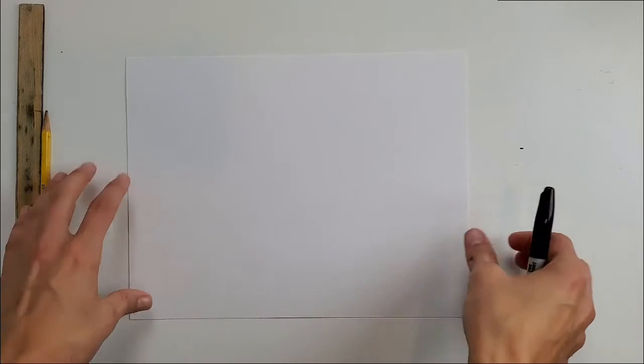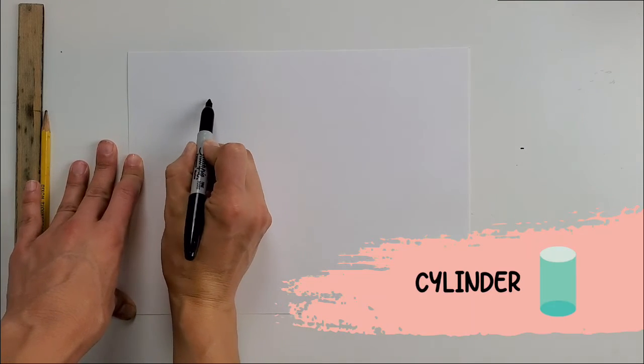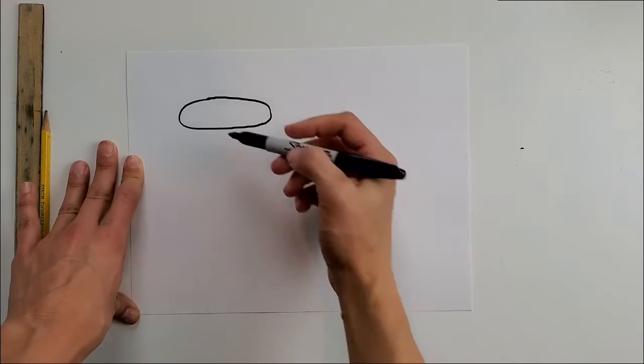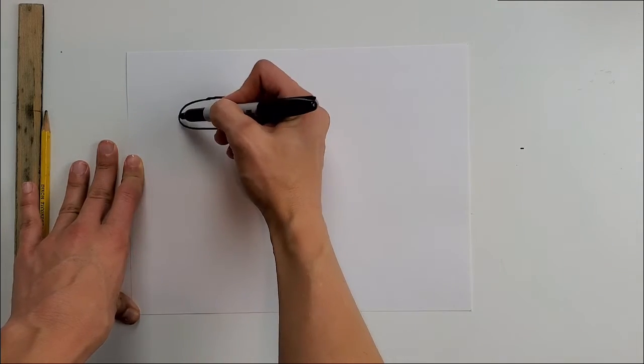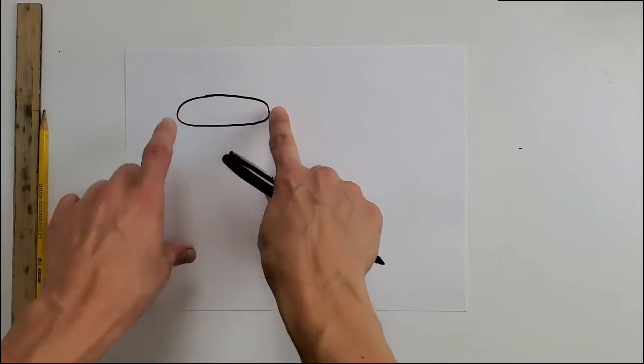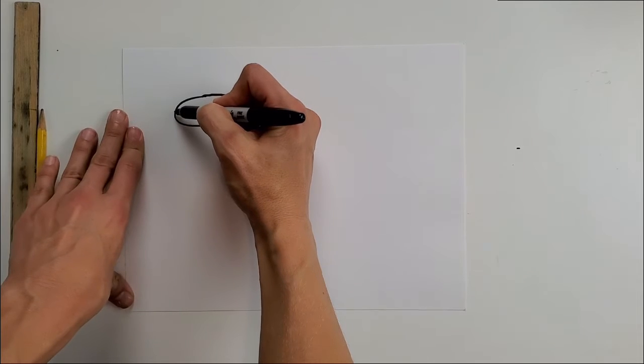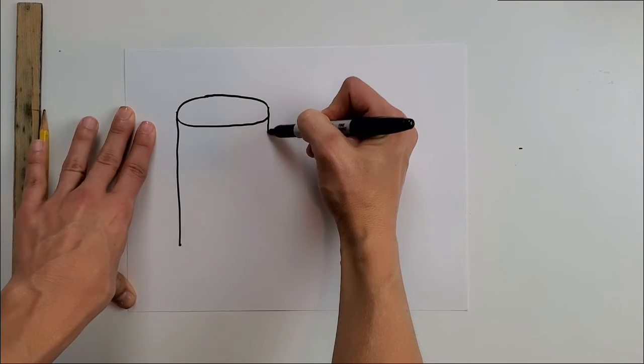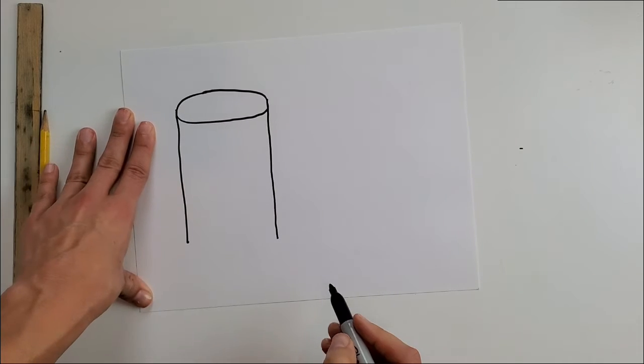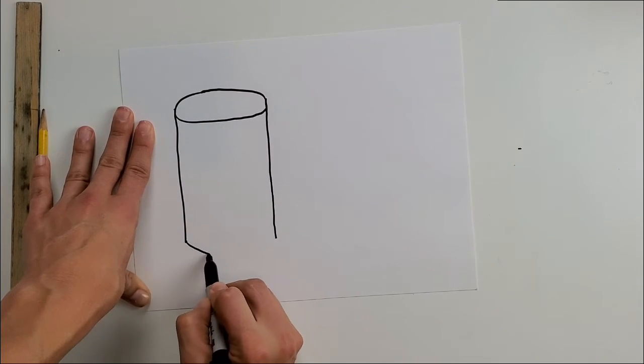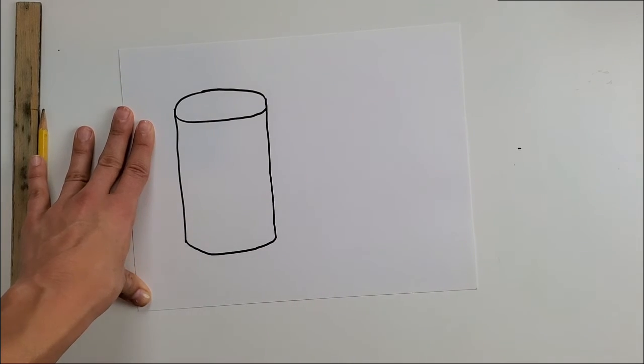Okay, let's do a cylinder now. A cylinder starts with an oval, and then all I have to do here is draw a straight line down from either of the sides of this oval, the ends of this oval. So a vertical line from the side straight down, from the side straight down, then the bottom is a curved line like that.